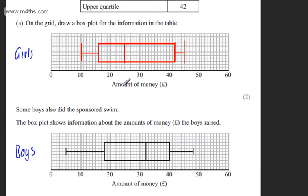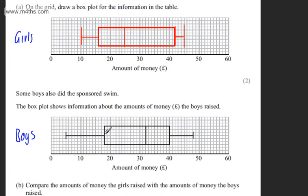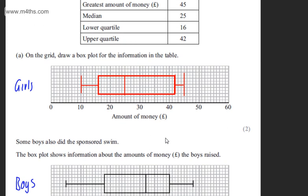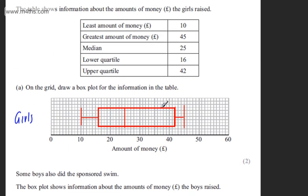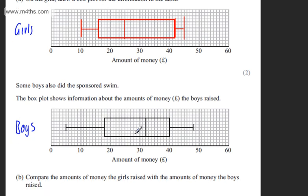We could also make reference to the middle 50% of the girls and boys. We can say that the amount of money collected by the middle 50% of the boys was more consistent than the girls, as the IQR was less. The interquartile range looks to be £22 here and £26 for the girls. So the middle 50% of boys were more consistent in the values they collected. Another one: we could say that the least amount and the greatest amount collected were both boys—£5 and £48.